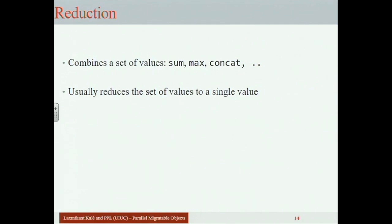Reductions combine a set of values from each chare using some commutative associative operation, reducing many values — one from each chare — to a single value. For example, everyone contributes one float and you want the max, or everyone contributes an integer and you want the sum. It doesn't have to be a single value — you can contribute an array of floats of size five, and the result is also of size five, where each position is the sum of all contributions at that position. This is a vector reduction.